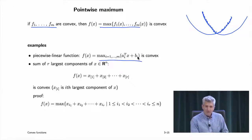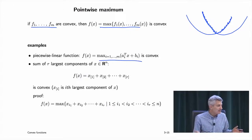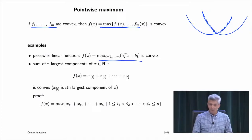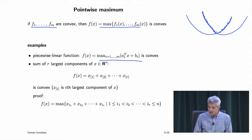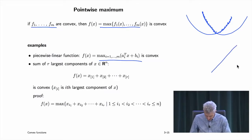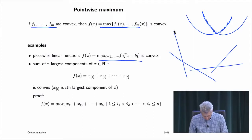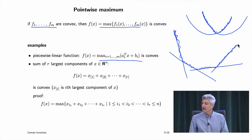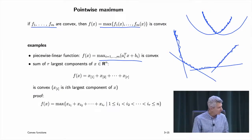Quick examples using point-wise maximum: piecewise linear functions. If you have a bunch of affine functions, their maximum is a convex piecewise linear function. This is a very specific form — you specify it implicitly as the maximum of affine functions, which gives you a piecewise linear convex function.